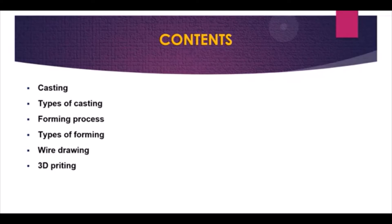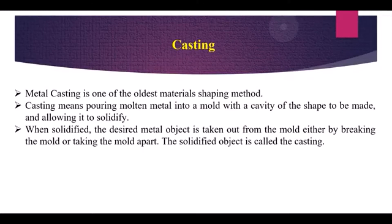The content we will learn today includes casting, types of casting, forming process, types of forming, wire drawing, and 3D printing. Manufacturing process is a process in which a raw or unfinished product is converted into a final or finished product, and under this we have casting, forming, machining, and related processes.